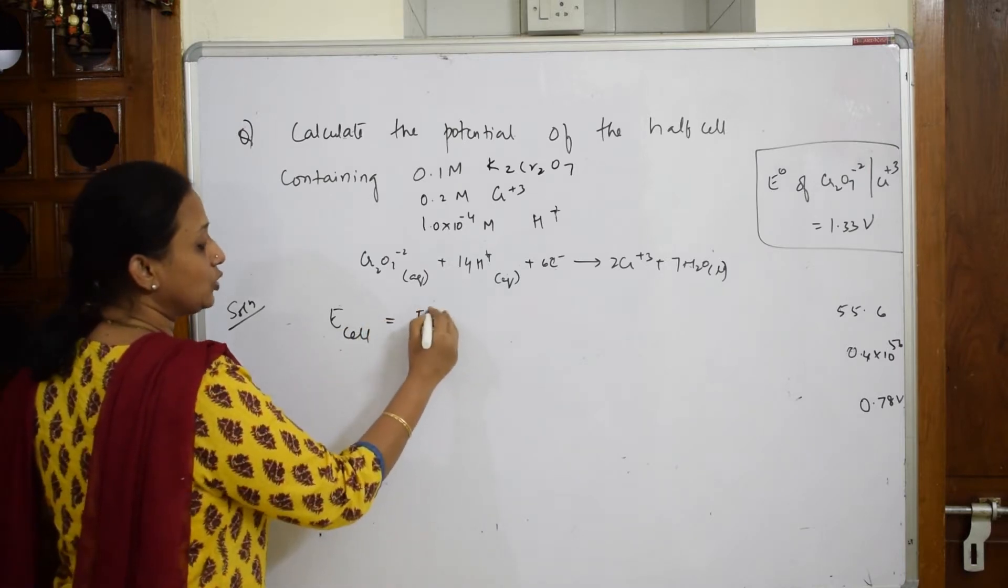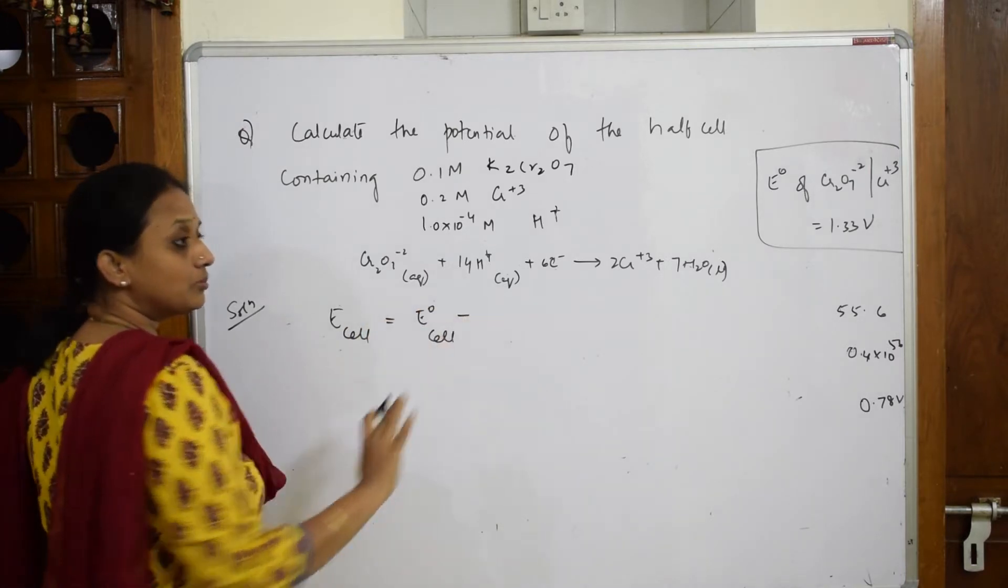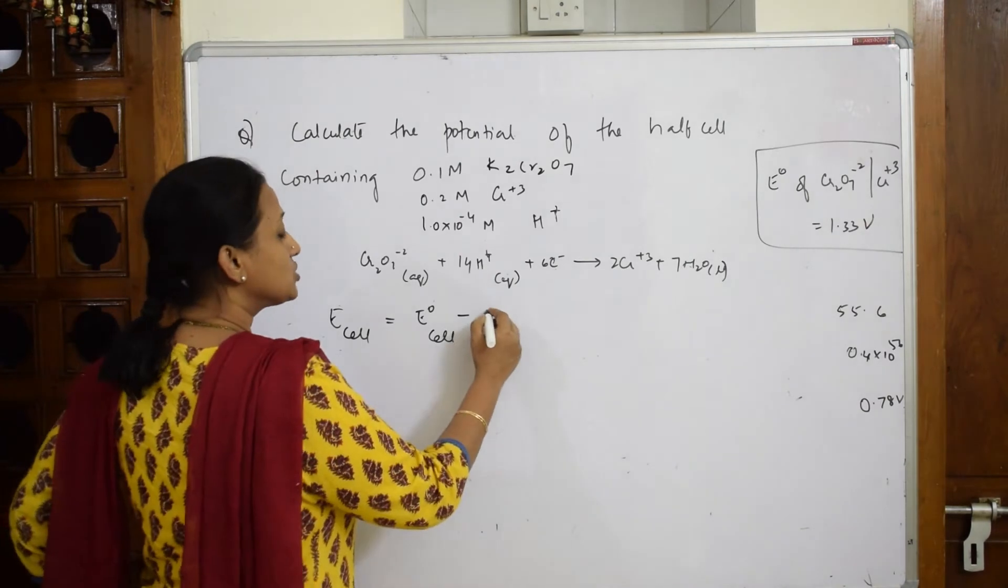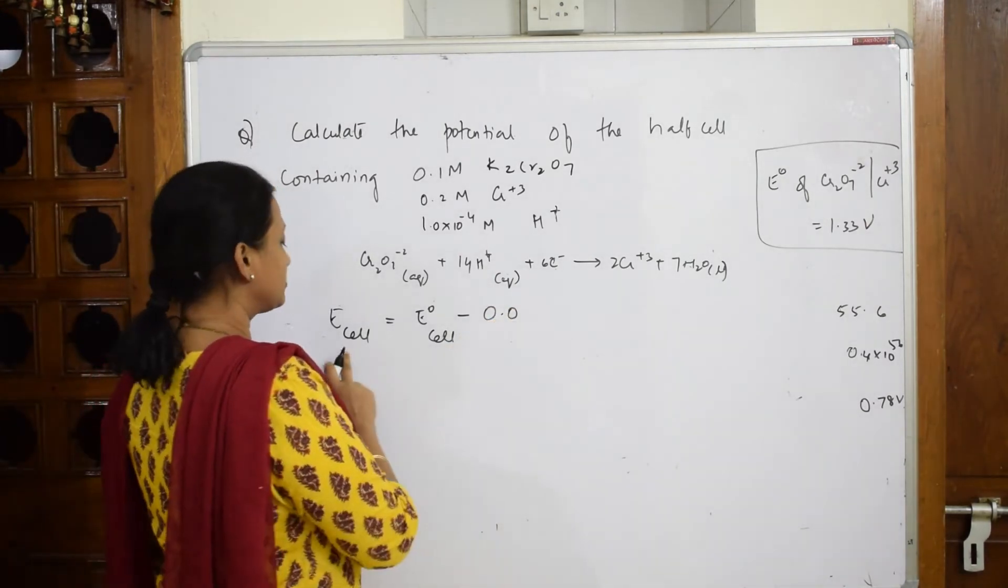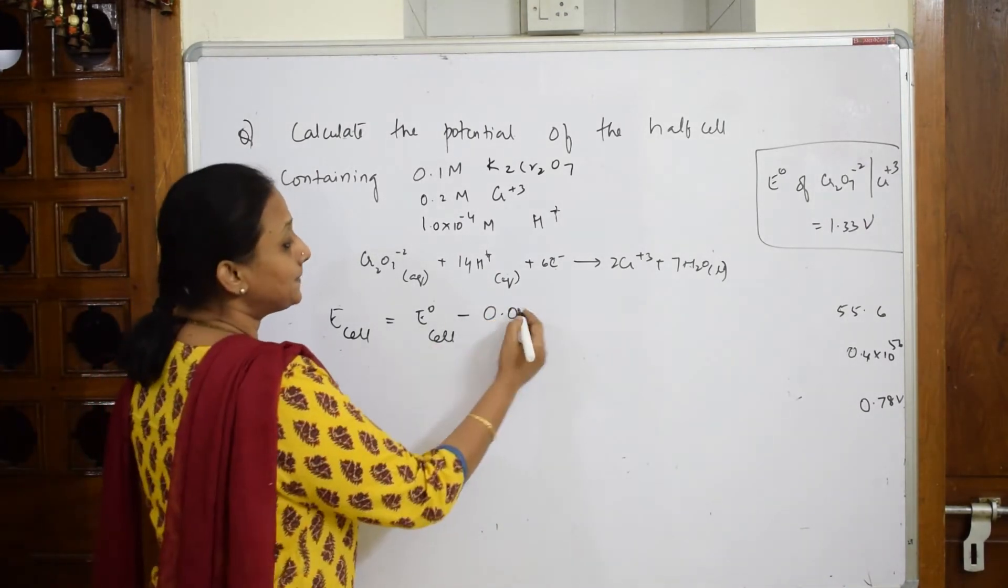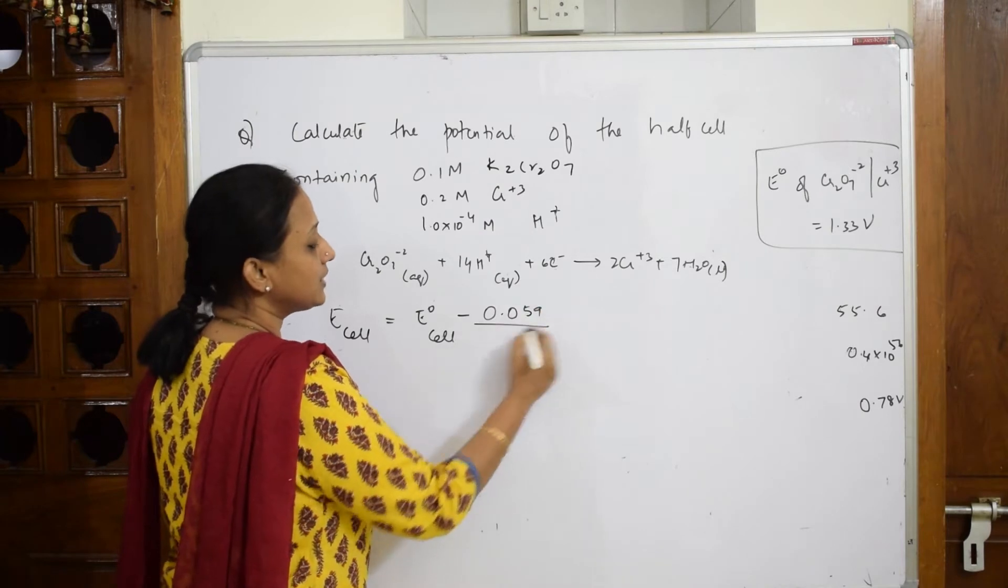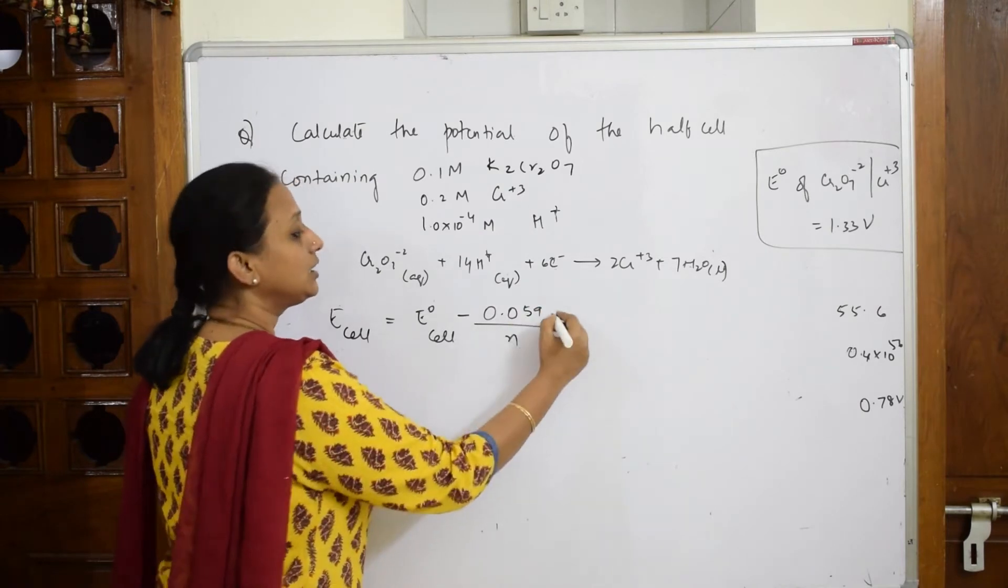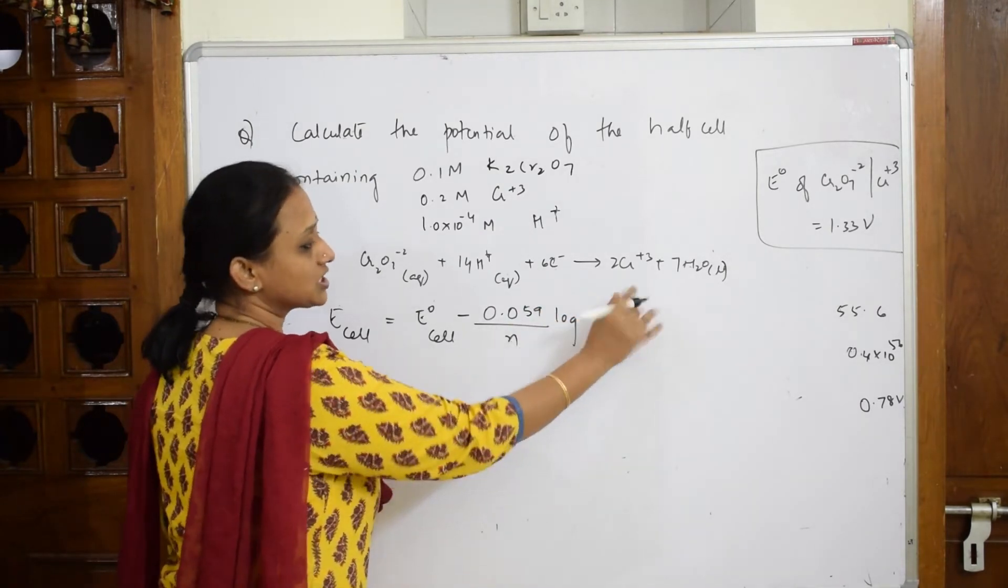One more thing you should be clear: what formula should you apply? So first let us write the Nernst equation because from the Nernst equation only you can calculate E cell = E° - 0.059/N log(products/reactants).